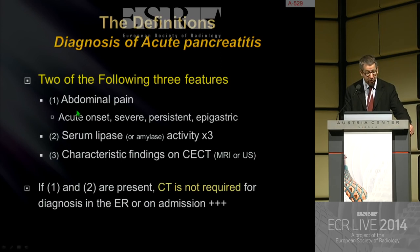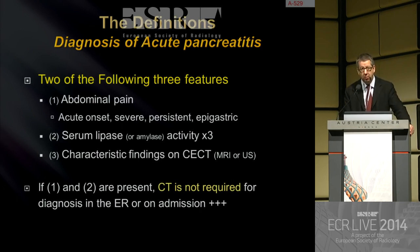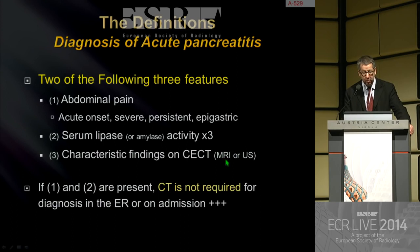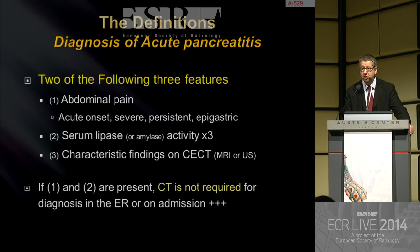You need two of the following three features to accurately define acute pancreatitis. First, abdominal pain with an acute onset, severe and persistent epigastric pain. Second, an increase of serum lipase activity three times above the upper limit of normal. Third, characteristic findings on contrast-enhanced CT, or MRI, or ultrasound to evaluate characteristic findings of acute pancreatitis on imaging studies. If abdominal pain and serum lipase increase are present, CT is clearly not required for diagnosis in the ER or on admission.